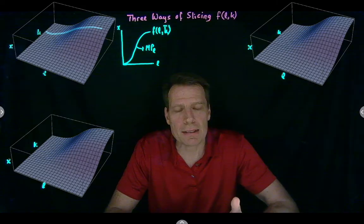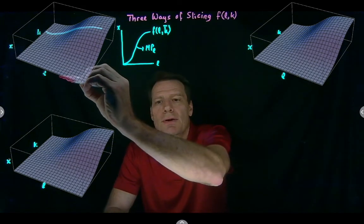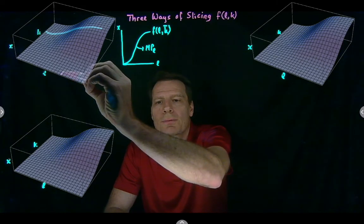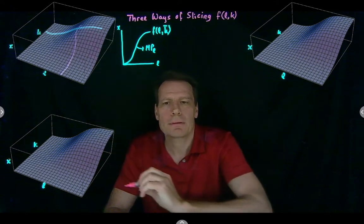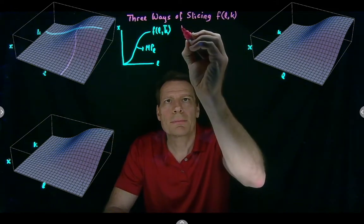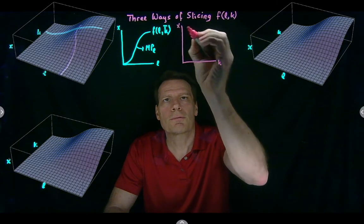We could similarly identify the marginal product of capital by holding labor fixed and just varying capital. So if we do that, we're operating on a slice that holds labor fixed, we just vary capital, and we get a similar picture, only now capital is on the horizontal axis. Output on the vertical.